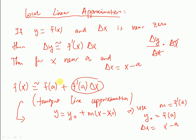From the previous population example, we approximated the population by using the current population at 1990 and adding the rate of 86 million people per year. Delta x was 1 (the change from 1990 to 1991). To estimate 1992, we use the 1990 value, multiply the rate by delta x equals 2 (since 1992 minus 1990 equals 2), and add that to the 1990 population. This is the tangent line approximation applied to the function.